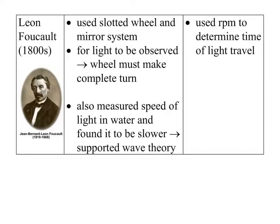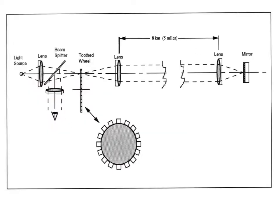And then this guy, so that was good for a hundred years or so. This guy named Leon Foucault came along and he uses this crazy slotted wheel and mirror system. And it's like not a bad idea, but he just really overcomplicated it. Because for light to be observed, the wheel has to make a complete turn. Which, again, light travels really, really, really fast. So to make a wheel make a complete turn in like fractions of a second is really, really difficult.